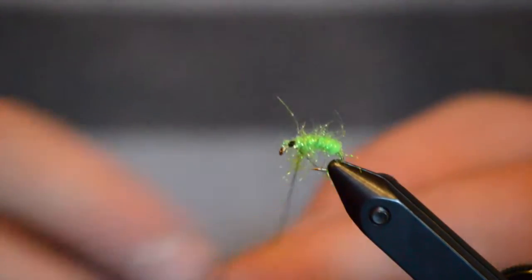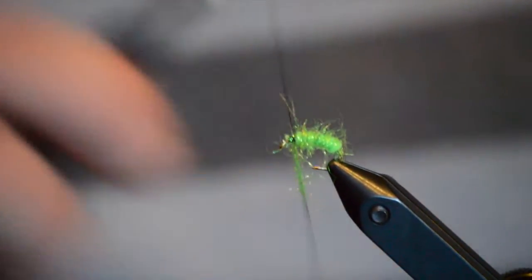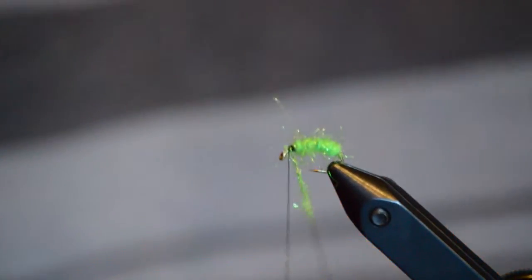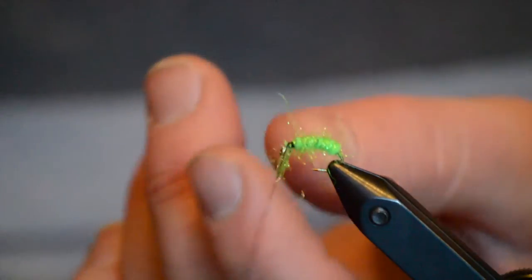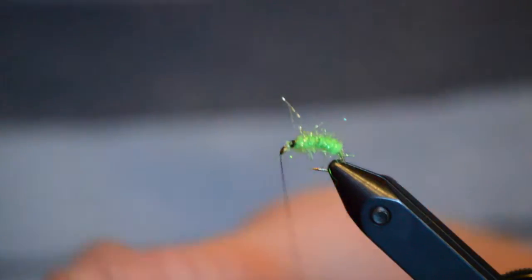We'll take our bobbin and capture that dubbing loop. Put a couple of tight wraps until we feel like it's secure. And then we'll clip the excess part of the dubbing loop off.